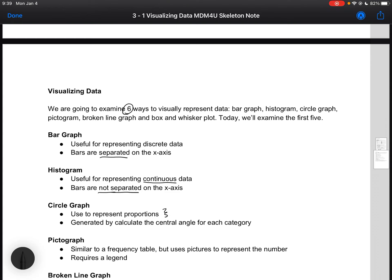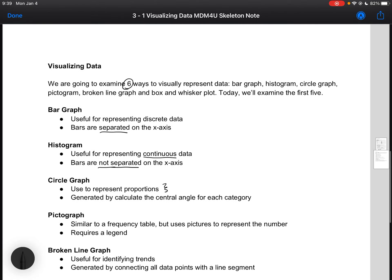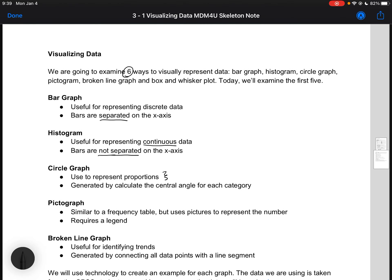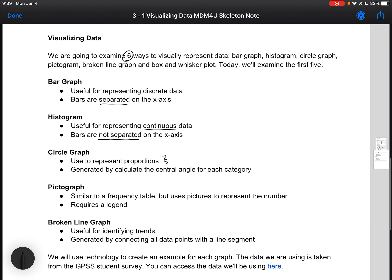A circle graph is used to represent proportions, often used for voting percentages, and it's generated by calculating the central angle for each category. A pictograph is similar to a frequency table but uses pictures to represent the number—it requires a legend to make sure you know what each picture represents. And then finally today, we're going to look at a broken line graph, which is useful for identifying trends and it's generated by connecting all the data points with a line segment.